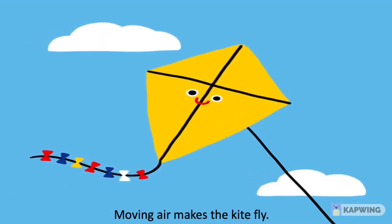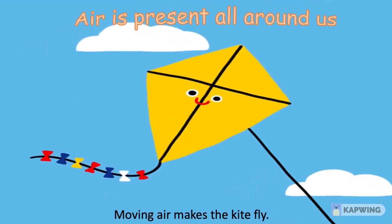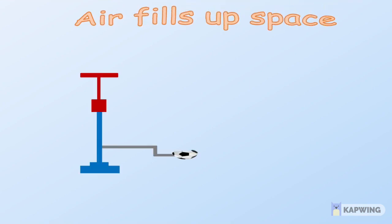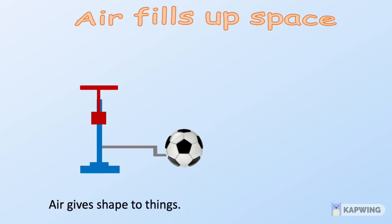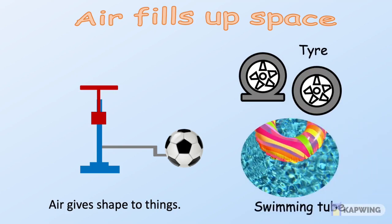So kids, with these examples we can say that air is present all around us. Air fills up space. For example, when you pump air into a flat football, the air takes up the space inside the football and gives the football its shape. This shows that air occupies space. We can even fill air in a tire, swimming tube, etc.